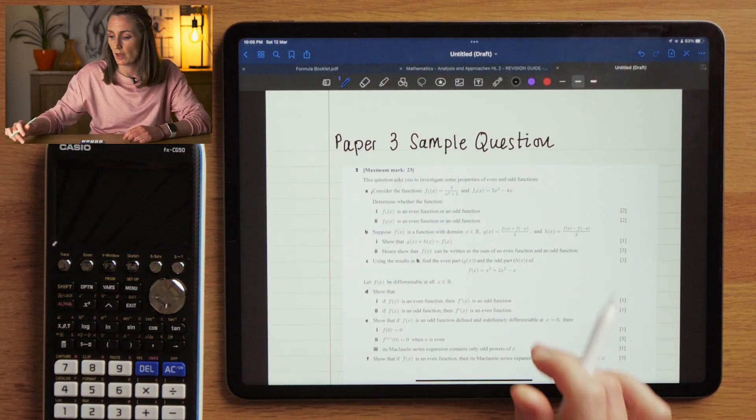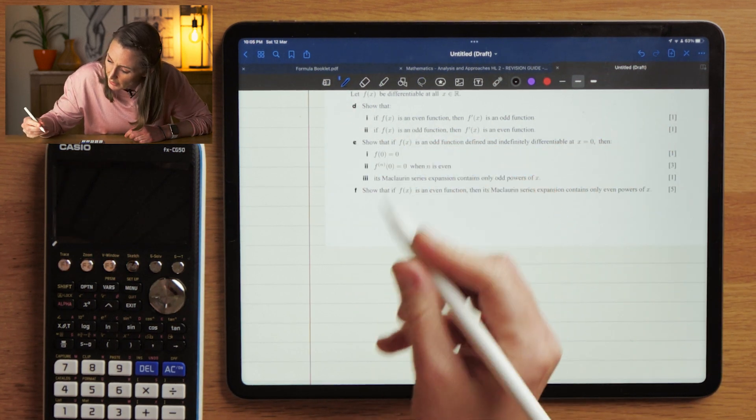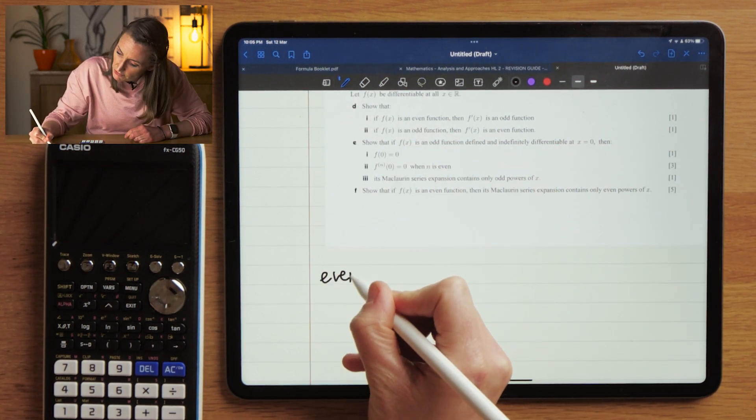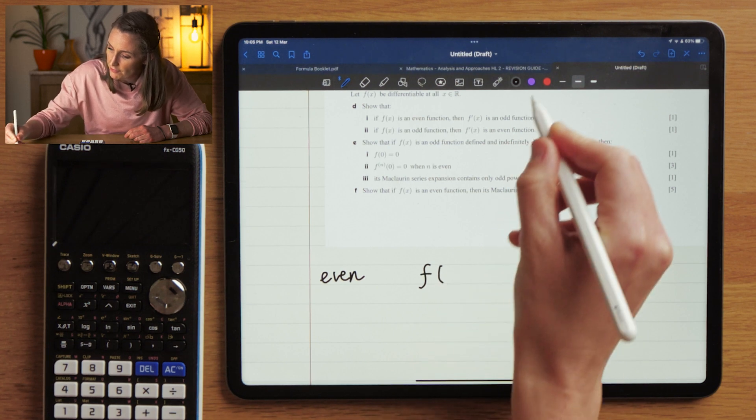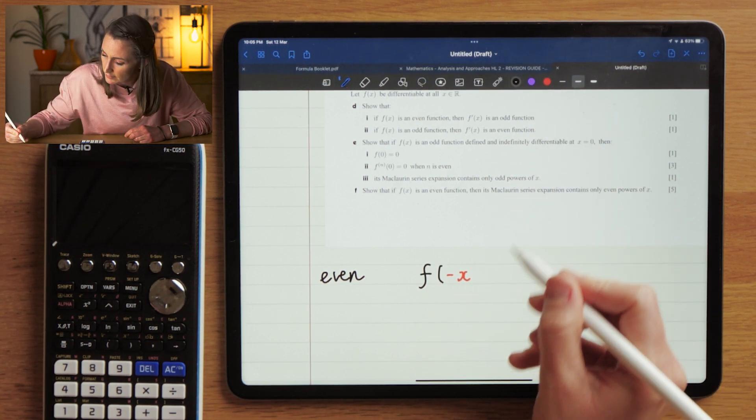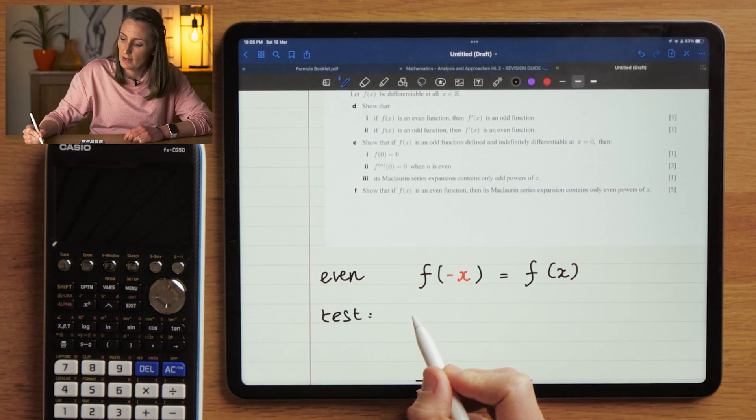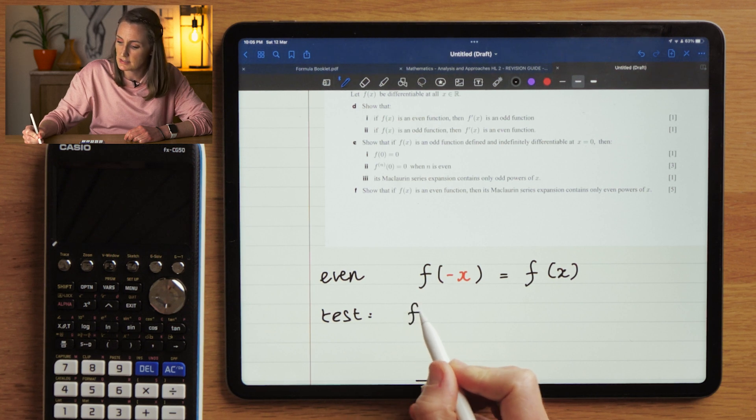We're going to start out by saying what is an even function. Okay, an even function. A function is even if f of minus x, I'm going to put that in brackets, is equal to f of x or plus f of x. Let's do a quick example here. We can test this function: f of x equals x squared.